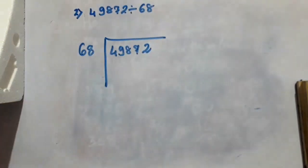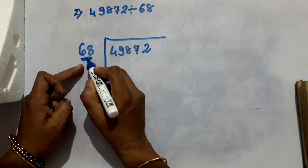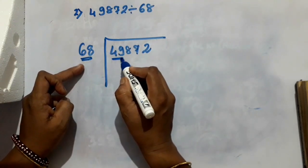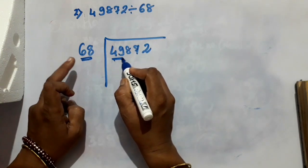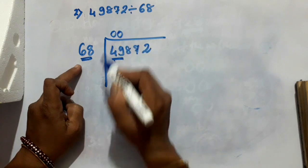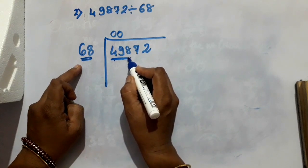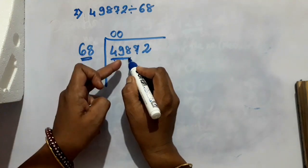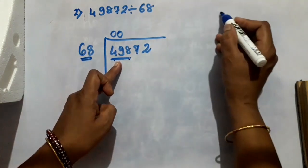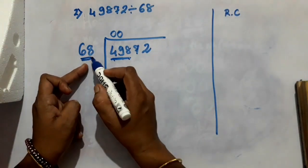Let us see another question: 49,872 divided by 68. The divisor has 2 digits. Check the first 2 digits of the dividend — 49 is smaller than 68, so write 00. Then consider 3 digits: 498. Make a rough column and round off 68 — it is nearer to 70, so think of 7 instead of 6.